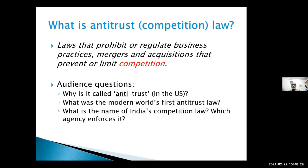The earlier law was the Monopolies and Restrictive Trade Practices Act — MRTP. The full form is Monopoly Restricted Trade Practices Act. It was passed in 1969, at the height of the so-called socialist tilt of the government — the same year as bank nationalization and other nationalizations, the year before the Patents Act. It was part of that era.